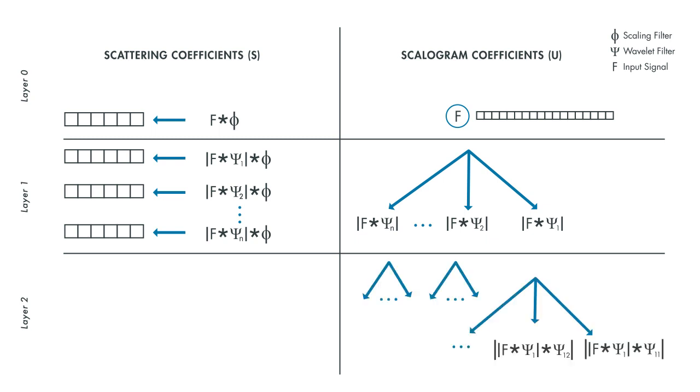The same process is repeated to obtain the layer 2 scattering coefficients, meaning the output of the scalogram coefficients in the previous layer becomes the input to the operations in the next layer. Then we apply the same modulus operator and filter the output with the wavelet low-pass function to yield the layer 2 scattering coefficients.